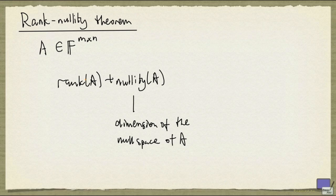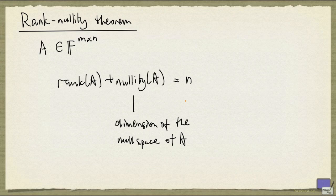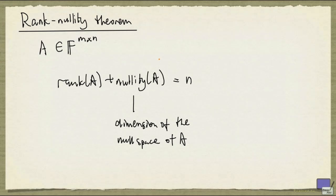The theorem states that the sum of the rank of A and the nullity of A is precisely the number of columns of A. And we're going to give a proof of this result.